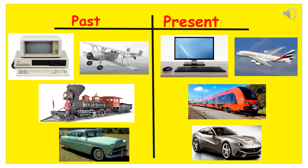Let's compare the technology of the past and present. The desktop of the past was very heavy and slow, but the desktop of the present is light and super fast. The aeroplane of the past only carried a few people and wasn't very fast, but the aeroplane of the present carries more people, has a TV inside, and is very fast.